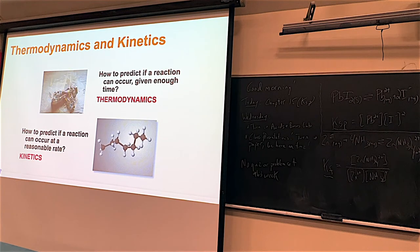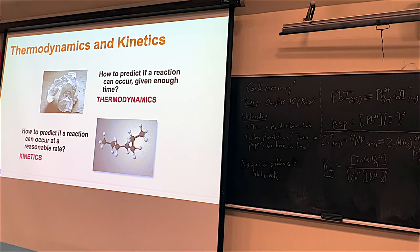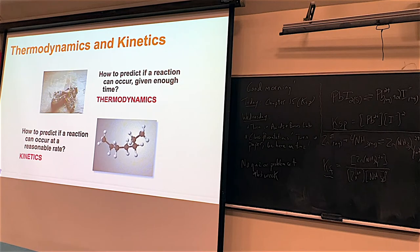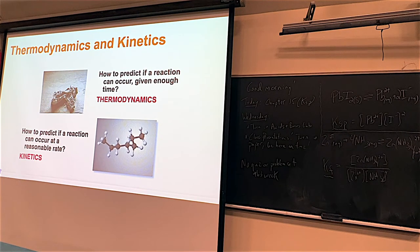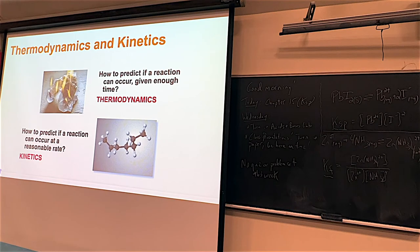Keep kinetics — the speed of reactions — in the back of your mind. For example, diamonds are thermodynamically going to turn into graphite one day. Something worth a lot at the jeweler's will eventually be worth pencil lead value. But don't sell your diamonds — the process is very, very slow and won't happen in our children's children's children's lifetimes. So kinetics is always a player in the background, especially for us as humans with a roughly 70-year lifespan.